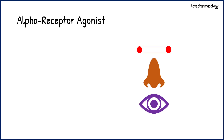Moving on to the actions produced by these alpha receptor agonists — as you can see in the picture, it shows a blood vessel. On the blood vessel, alpha receptor agonists cause vasoconstriction by acting on the alpha-1 receptor present in the blood vessels. There will be vasoconstriction of the nasal mucosal blood vessels, causing nasal vasoconstriction.